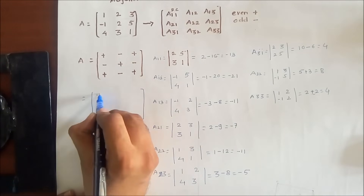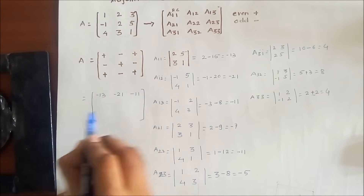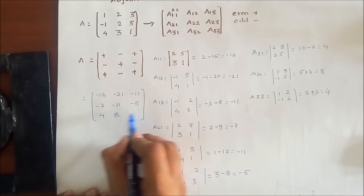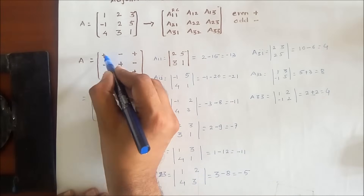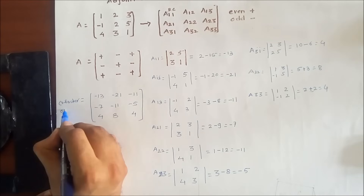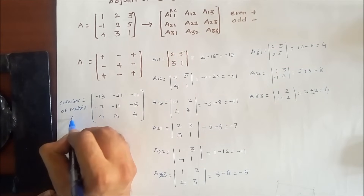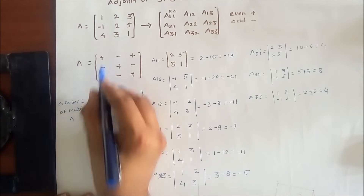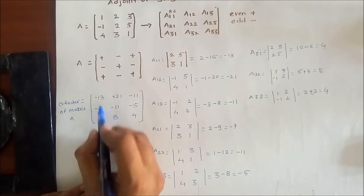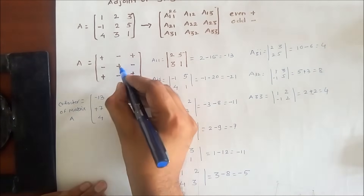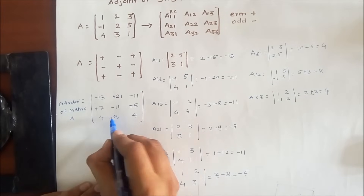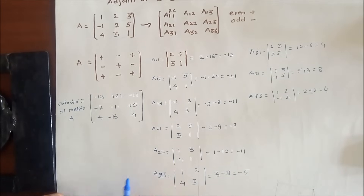Now we write all the cofactors into the matrix: A11=-13, A12=21, A13=-11, A21=-7, A22=-11, A23=-5, A31=4, A32=8, A33=4. Then we have to give the sign symbols to those cofactors. Applying the sign convention [+,-,+; -,+,-; +,-,+], we get the signed cofactor matrix.